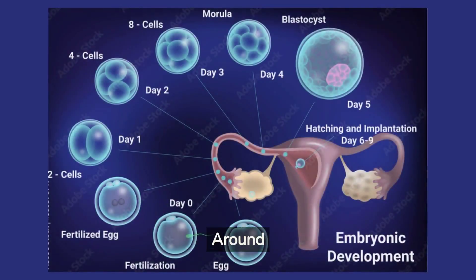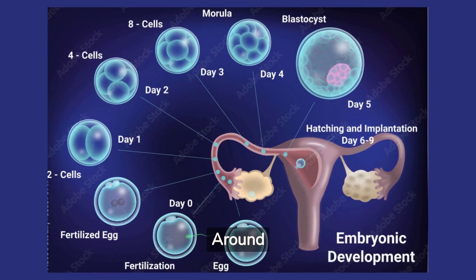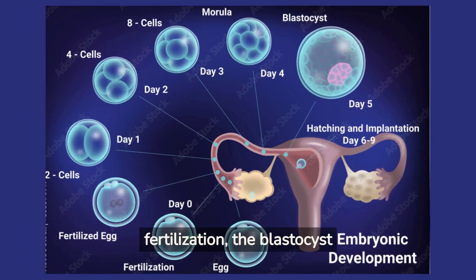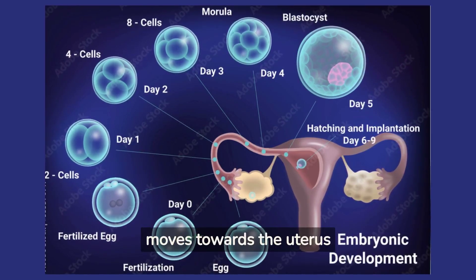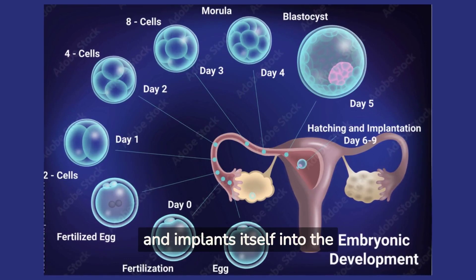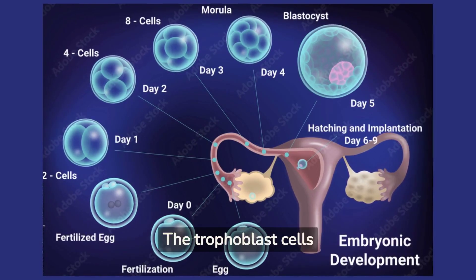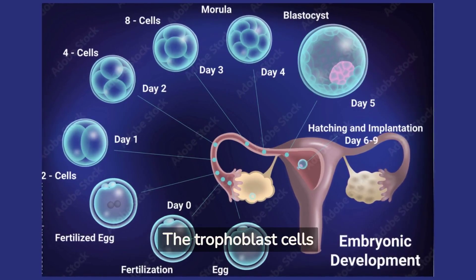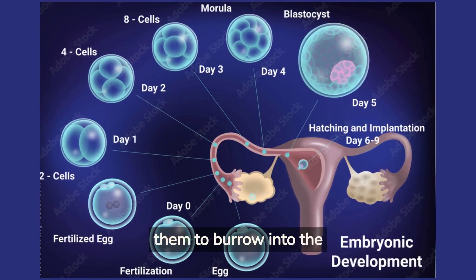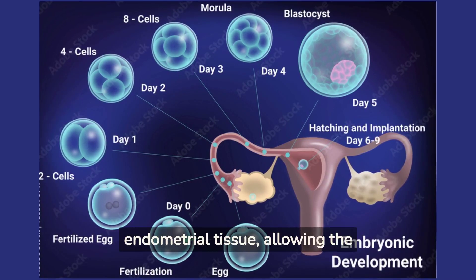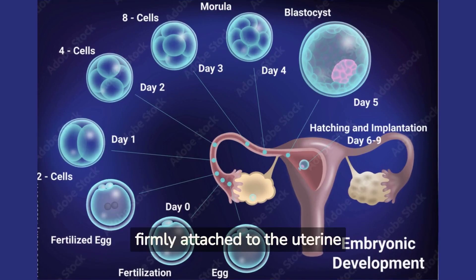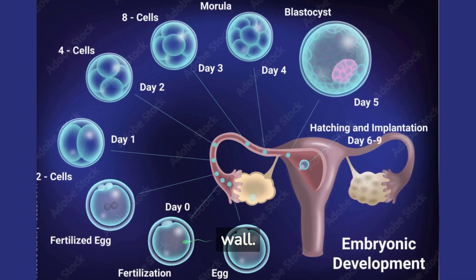Implantation. Around 7 to 10 days after fertilization, the blastocyst moves towards the uterus and implants itself into the uterine lining. The trophoblast cells secrete enzymes that enable them to burrow into the endometrial tissue, allowing the blastocyst to become firmly attached to the uterine wall.